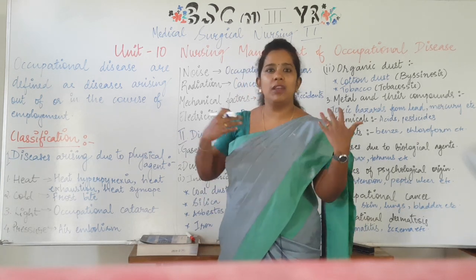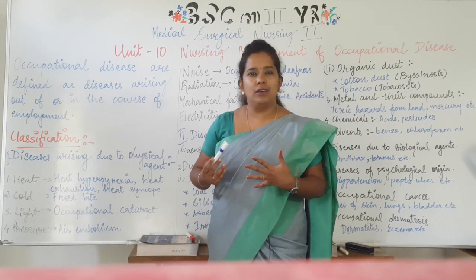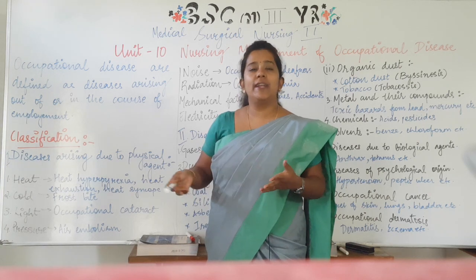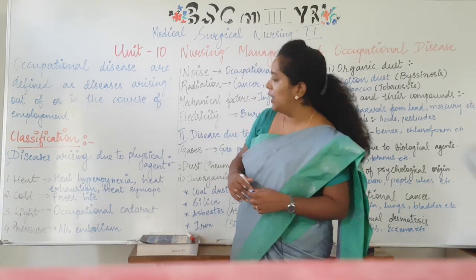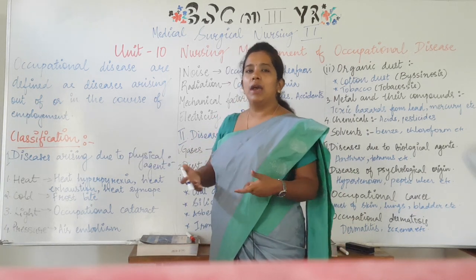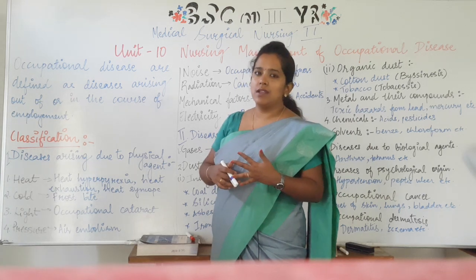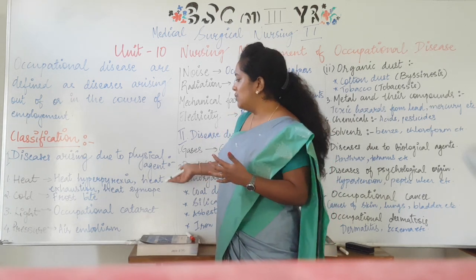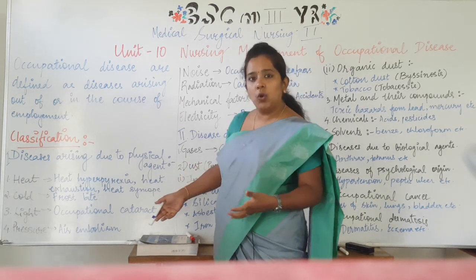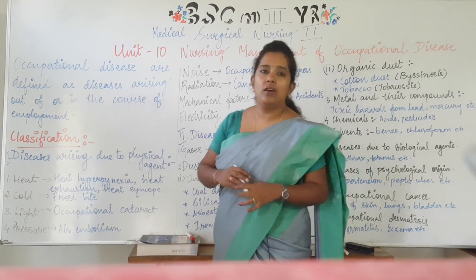The first classification is according to physical agents — physical agents which we have in the environment, like heat, cold, pressure, and radiations. If we talk about heat, then the chances of hyperpyrexia, excessive body temperatures, heat exhaustion, heat syncope, and weakness or vertigo — these all come under hot environment conditions.